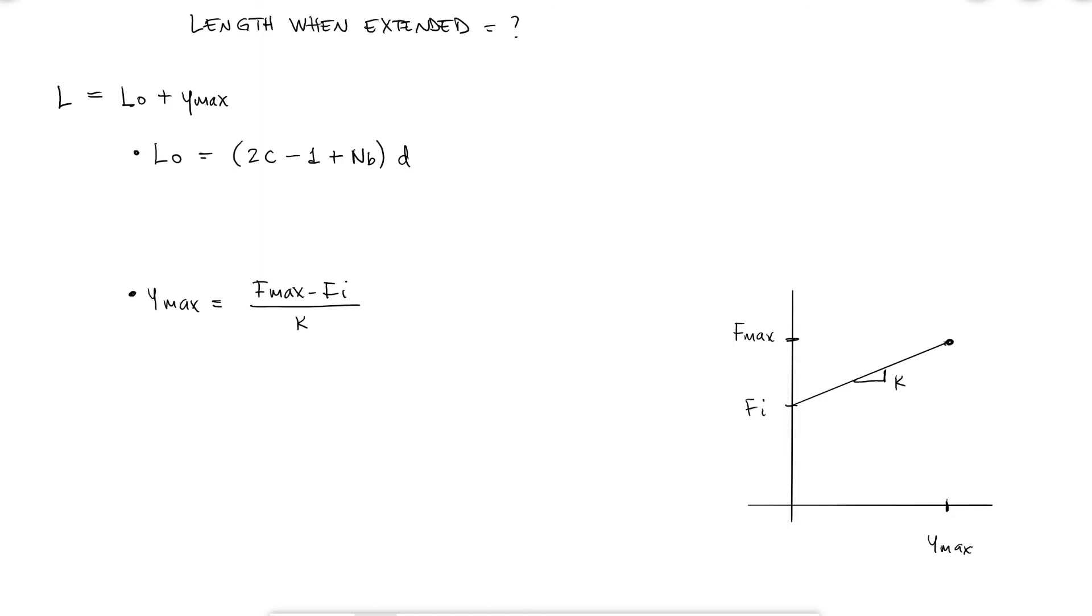For the spring index I will need the mean coil diameter capital D, which can be found with the outer diameter information I got at the beginning. Using the spring index, the 12.5 body turns, and the wire diameter, I find that my free length is 0.93 inches.